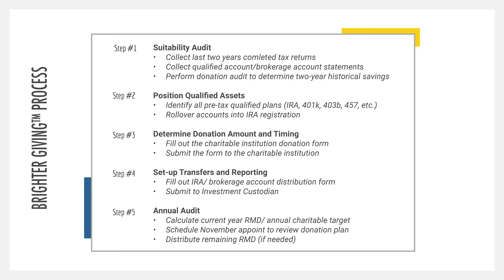As a general statement, the minimum that you would need to do this audit is collecting your last two years of completed tax returns to understand your tax environment, and then gather your qualified accounts so you know what your required minimum distribution will be for the upcoming year. Using that information and walking through the Brighter Giving Impact worksheet will give you the best idea of whether it's a good idea for you, based on how much you would have saved had you done it in the past. That's always good motivation to actually complete those charitable contributions.